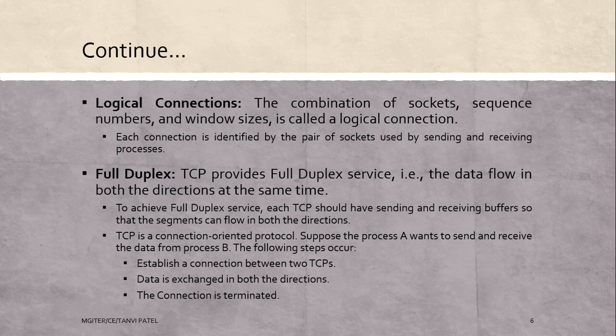Next is full duplex. TCP provides full duplex services, meaning data flows in both directions at the same time. To achieve full duplex services, each TCP should have a sending and receiving buffer so that segments can flow in both directions simultaneously. TCP is a connection-oriented protocol. If process A wants to send and receive data from process B, the steps are: establish a connection between the two TCP protocols, exchange data in both directions, and then terminate the connection.